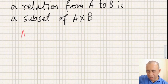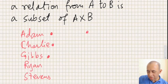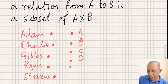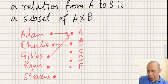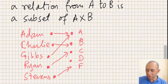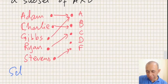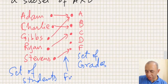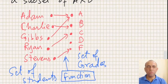A graphical representation of a function can be shown with a set of students, drawing a dot for each, and another set of grades defined as A, B, C, D, and F. We assign grades to each student: this one gets an A, this one gets an A, this one gets a B, this one gets a C, and this one gets an F — no one gets a D. This is the function from the set of students to the set of grades.